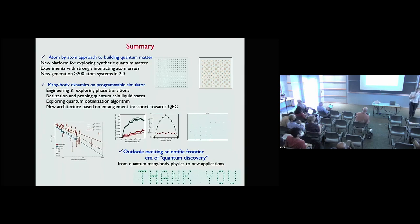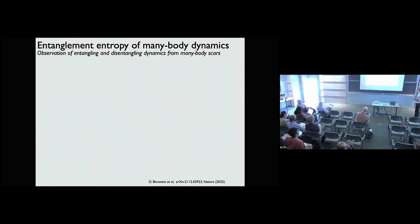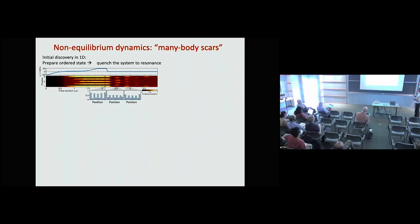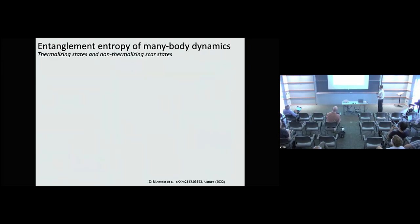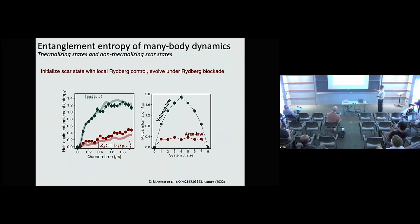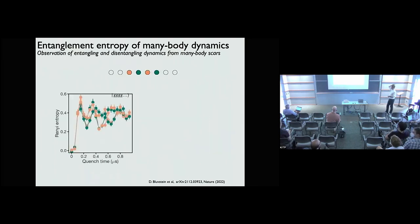A question about the non-monotonic entanglement in the scar states: what we did was prepare the antiferromagnetic state by hand and then do a quench. We watched how entanglement grows — here this is half-chain entanglement entropy — and it grows much more slowly than for the thermalizing state. We then looked at entropy for different subsystems — every other atom — and for the thermalizing state it just reaches some equilibrium value after the quench.